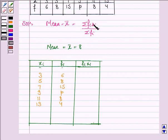Now we'll find fi xi. 3 times 6 is 18, 5 times 8 is 40, 7 times 15 is 105, 9 times p is 9p, 11 times 8 is 88, 13 times 4 is 52.